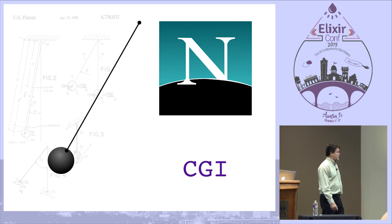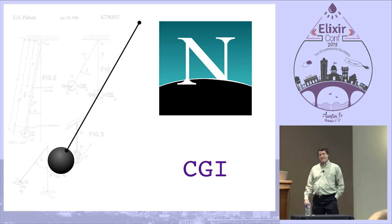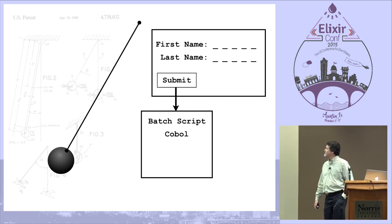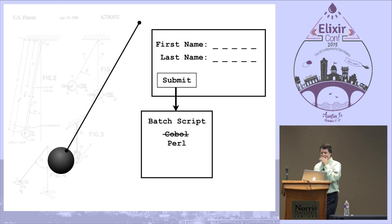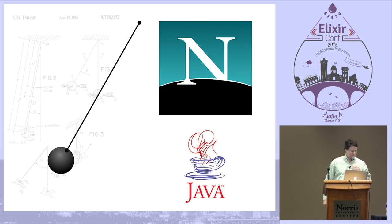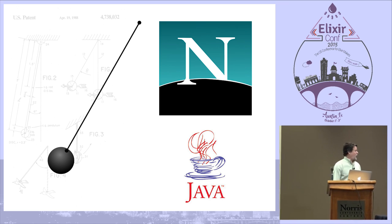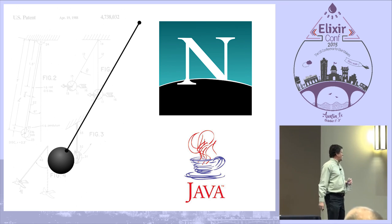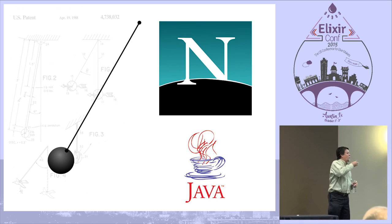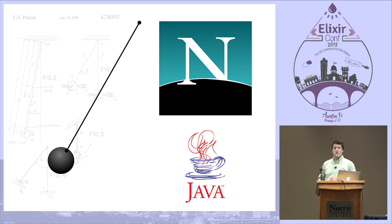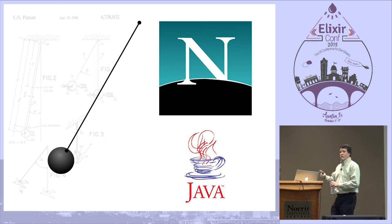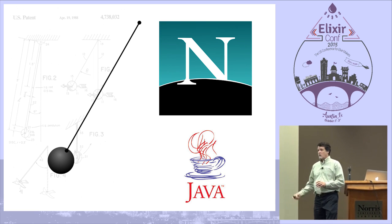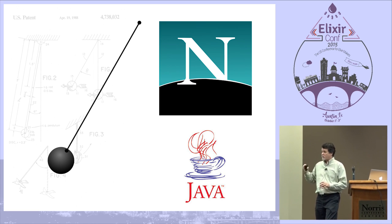We started building applications this way. You had a browser and you had CGI. We were doing this again — Java talking to Netscape — and that's the mainframe and the dumb terminal all over again. The pendulum has swung. And it's a big deal because now we can scale this. The connection pool was enabled by giving our applications lobotomies — making them stateless.